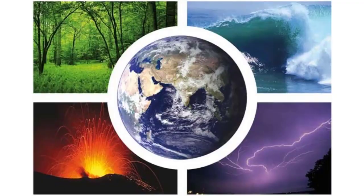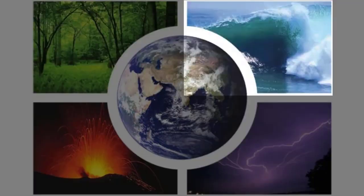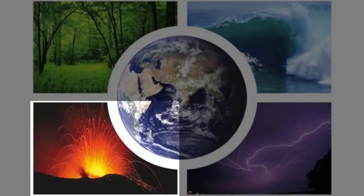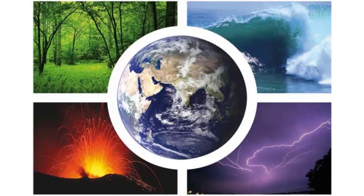One of the fundamental understandings as part of the Earth systems model that we use to characterise the atmosphere, biosphere, hydrosphere and geosphere, or the interaction of those systems, is that if you make a change in one of those spheres, it's likely to impact at least another one of those spheres — and it can impact all of them in fact.